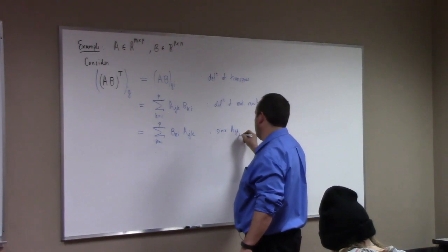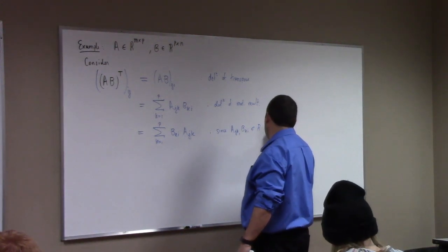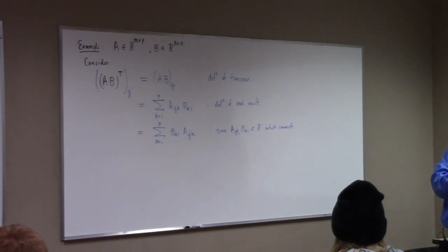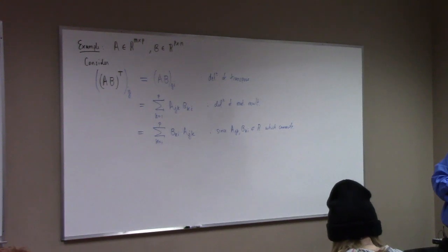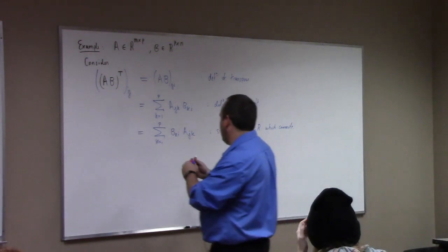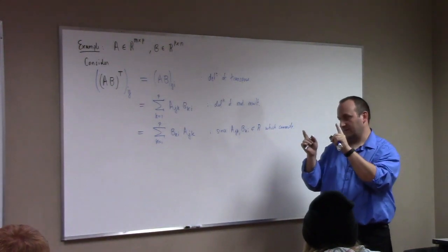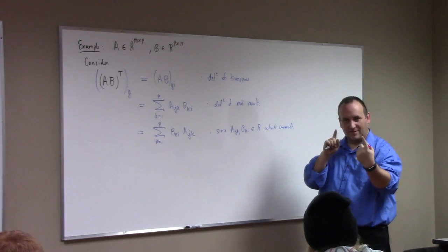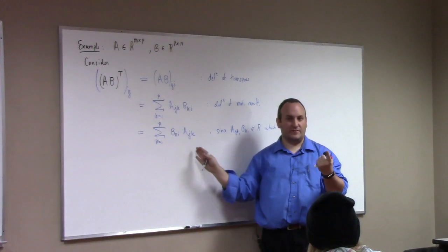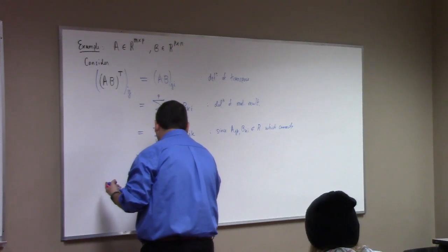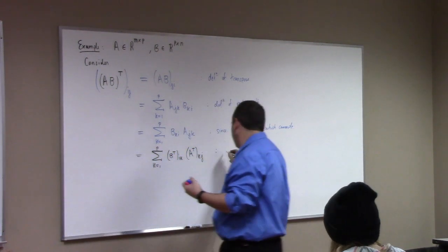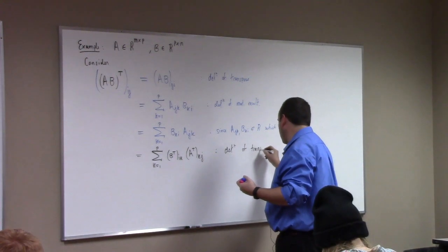So this is equal to the sum K equals 1 to P of B_KI times A_JK, since A_JK and B_KI are just elements of R which commute - multiplication in the ring commutes. So I can switch the order. If I want to make this look like a matrix multiplication again, I need the K to match up. In order to put K on the right of the left term and on the left of the right term, I should look at the transpose of B and the transpose of A. This equals the sum K equals 1 to P of B^T_IK times A^T_KJ. Definition of transpose, two times.